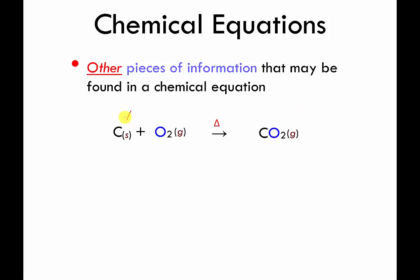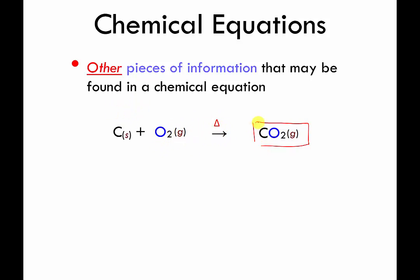Here's a new symbol: parentheses S. You may be able to guess — if G means gas, S probably means solid. So this equation has more information: I took solid carbon — maybe a diamond, which is made of solid carbon — mixed it with O2 gas, heated them up, and made carbon dioxide gas. We're building up a collection of symbols: (s), (g), and the triangle over the arrow.